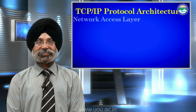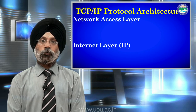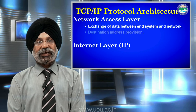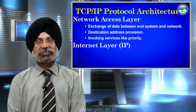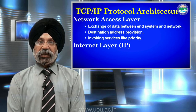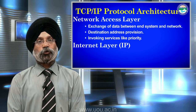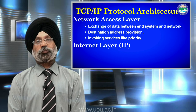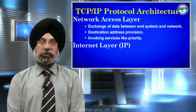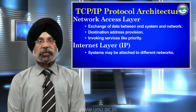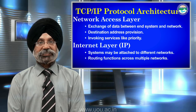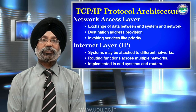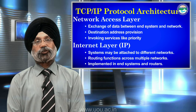Next comes the network access layer and the internet layer, which are one in the TCP/IP architecture. This layer exchanges data between the system and the network. It provides destination address and invokes services like priority — which is class of service. For example, voice messages need to be in sequence and get top priority, whereas emails can get lower priority. The internet layer handles routing functions across multiple networks and is implemented in end systems and routers, used for basic communication and address resolving.